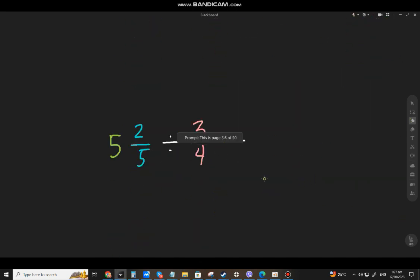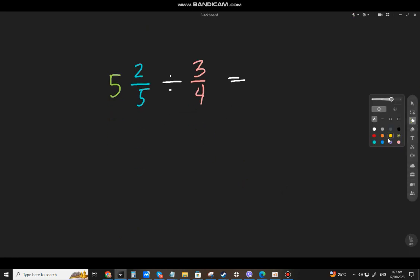Let's move on to the next example. What if we have 5 and 2⁄5 divided by 3⁄4? Again, you have to change the mixed number to an improper fraction. So that will be 5 times 5, 25, plus 2, will be 27 over 5.